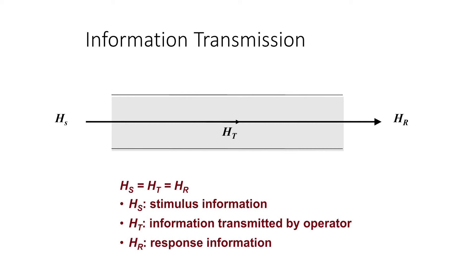In an ideal world, our stimulus information equals the transmitted info, which then equals the response info. However, we know that this isn't necessarily going to be the case. Affordances help us intuitively make the correct responses. Information processing requires us to look at the situation and then select an appropriate response — ultimately, we want things designed so that people can intuitively make the correct response. As we master a task, we need less cognitive oversight and we're going to improve our accuracy. Task complexity, or how many steps are needed to plan and execute a response, and the reaction time required for the response are going to be the primary factors in determining the quality of information transmission.